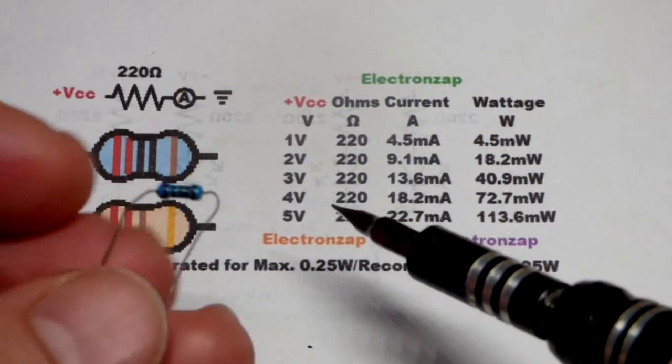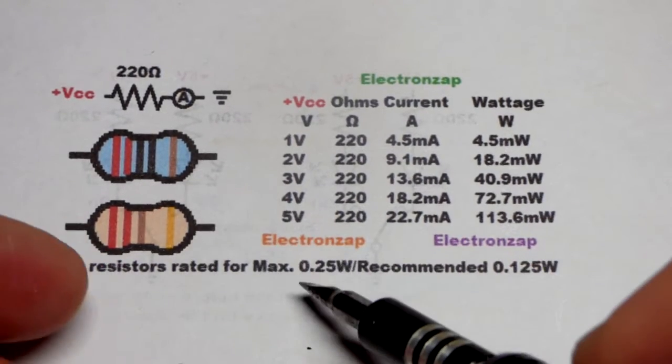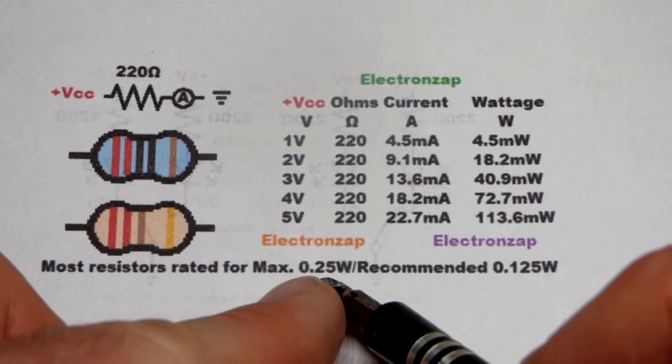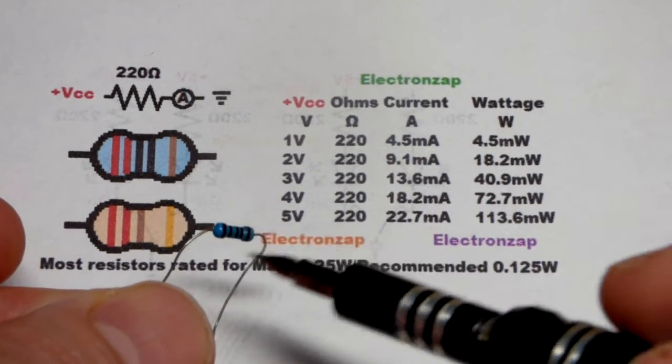Here is a quarter watt resistor. It's not 220 ohm. You can see the color right there. But it's a quarter watt resistor, so 0.25 watts. That's the maximum though.